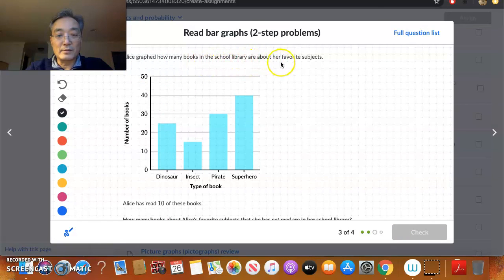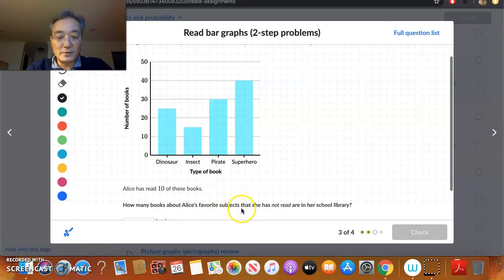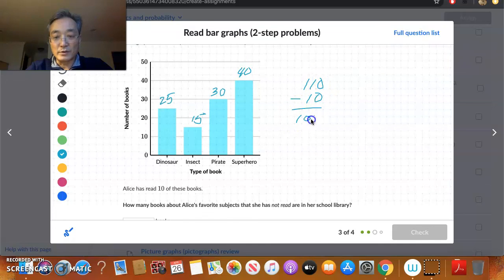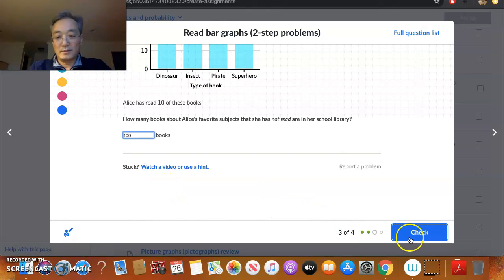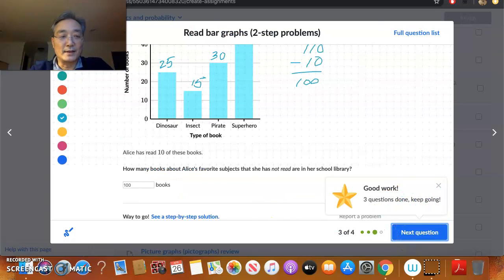And let's do one more. Alice graphed how many books in the school library are about her favorite subjects. Here's the number of books, type of books. Alice has read ten of these books. How many books about Alice's favorite subjects that she has not read are in her school library? So basically, she has read ten, and now you just got to count all these up and then subtract the ten. So this looks like it's about twenty-five, this looks like it's probably around fifteen, this is thirty, and this is forty. So if you add them all up, this is forty, eighty, and thirty is one-ten. And it says she's read ten of these. So I guess she still has one hundred more to go. And that is correct. Alright, take care. Bye.